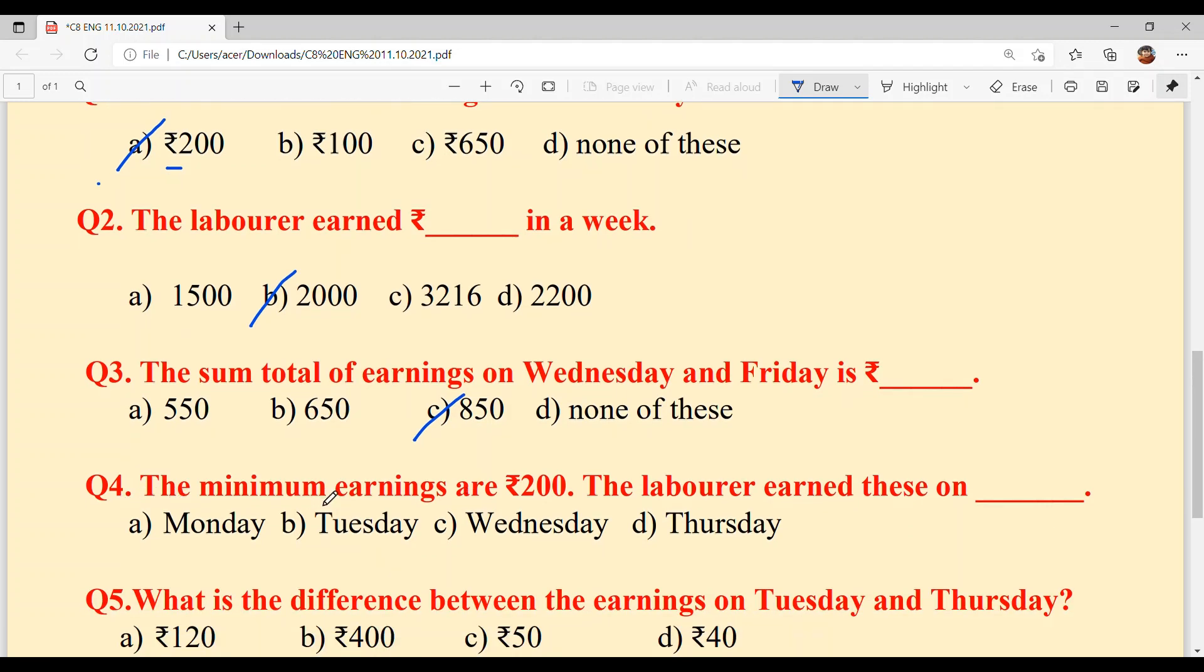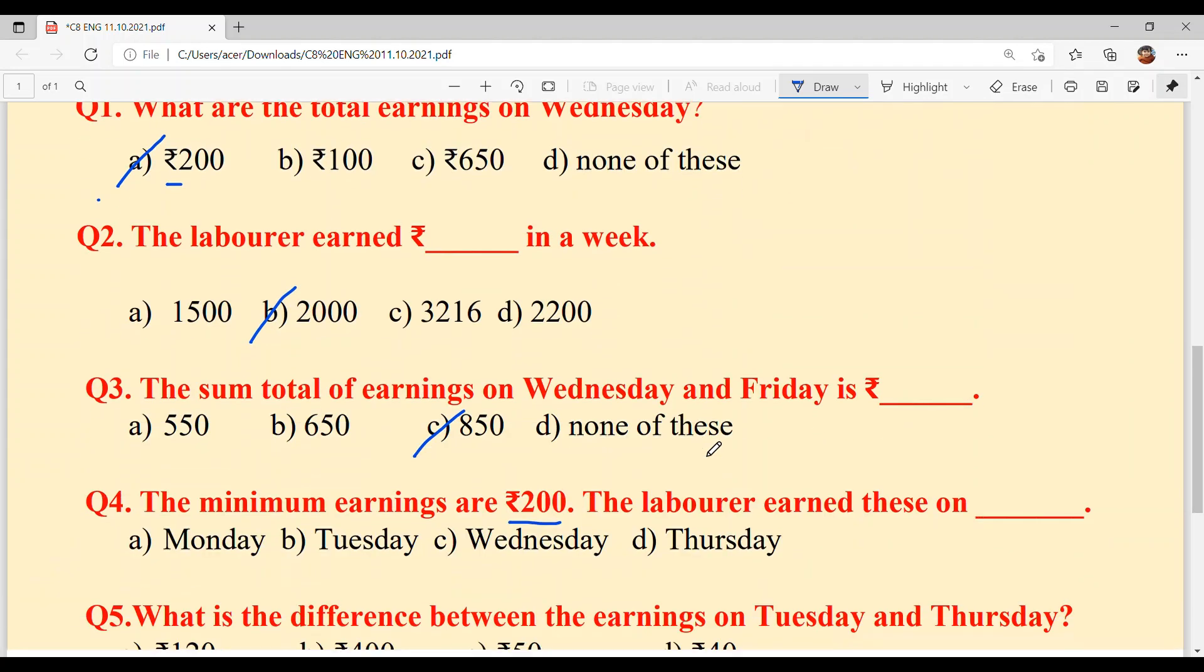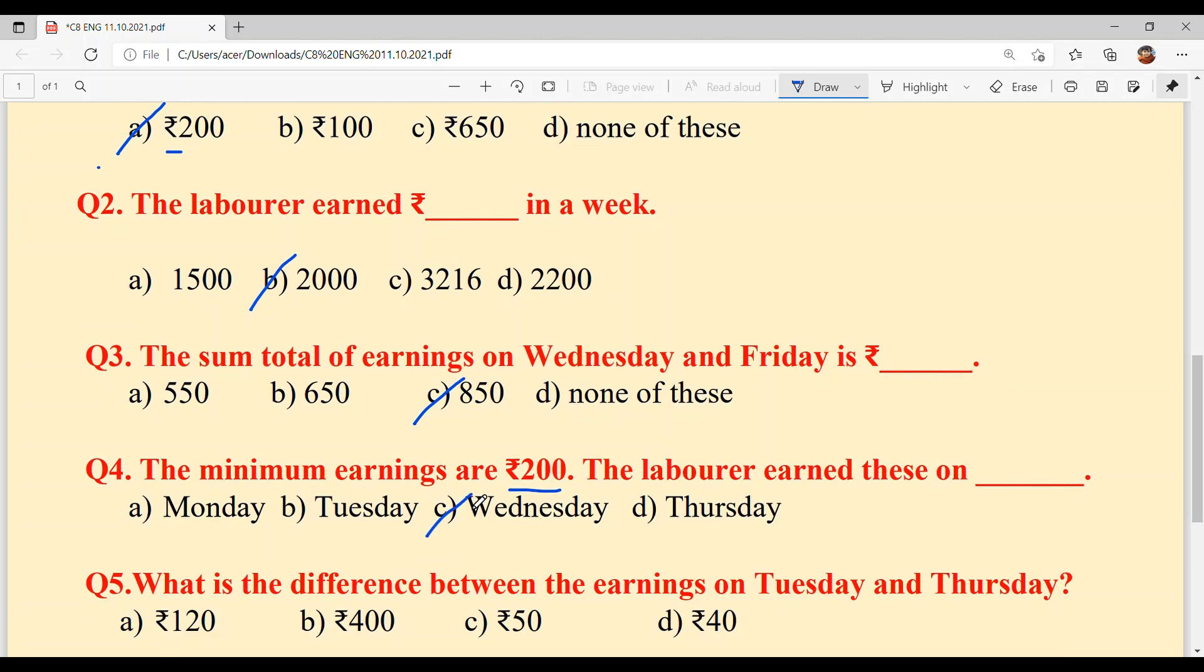Question number fourth, the minimum earnings are 200 rupees. The laborer earned these on dash. The minimum wages or earnings were 200 rupees. On which day did he earn this? Very easy, Wednesday. Option C.